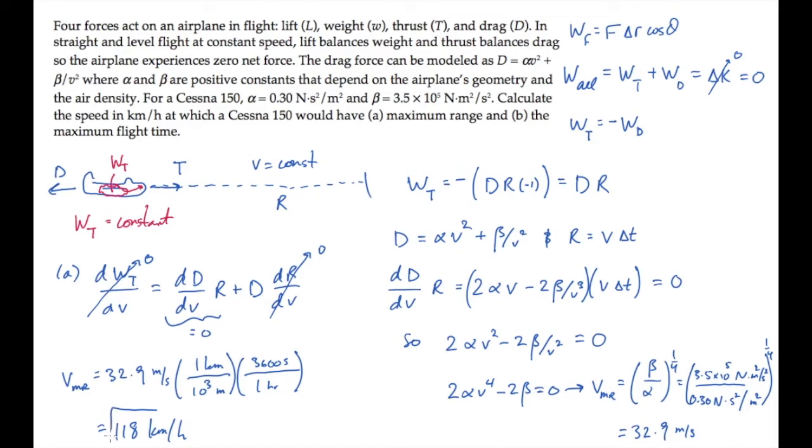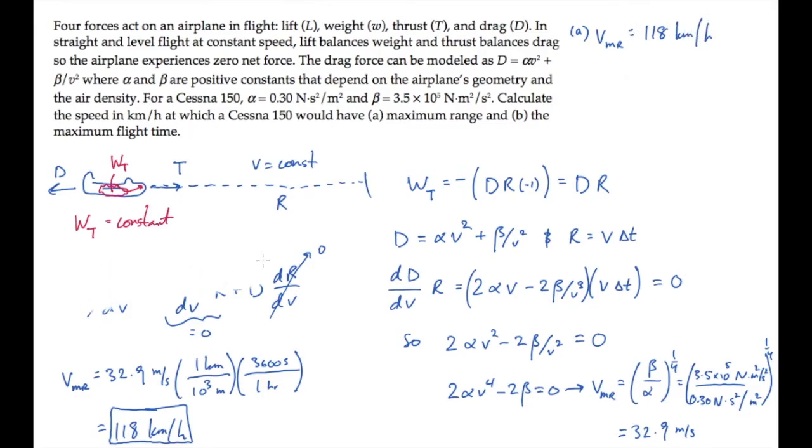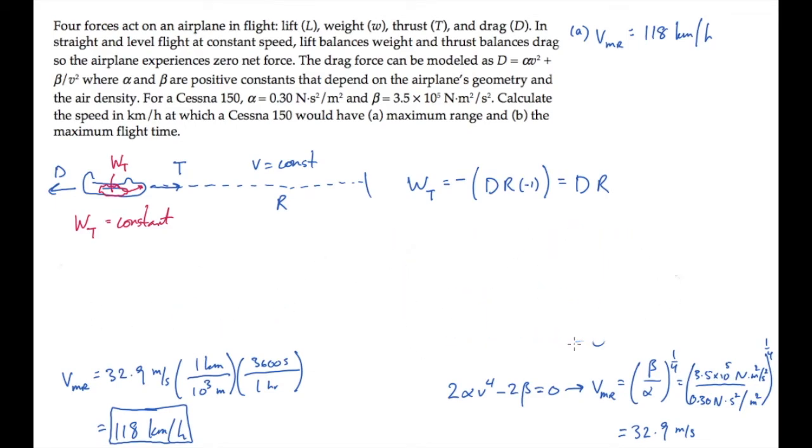Now let me erase some here from the upper right, so we can record this value. And then erase some of the rest of this, so we have room to solve part B, which asks us to find the speed V that maximizes the flight time.